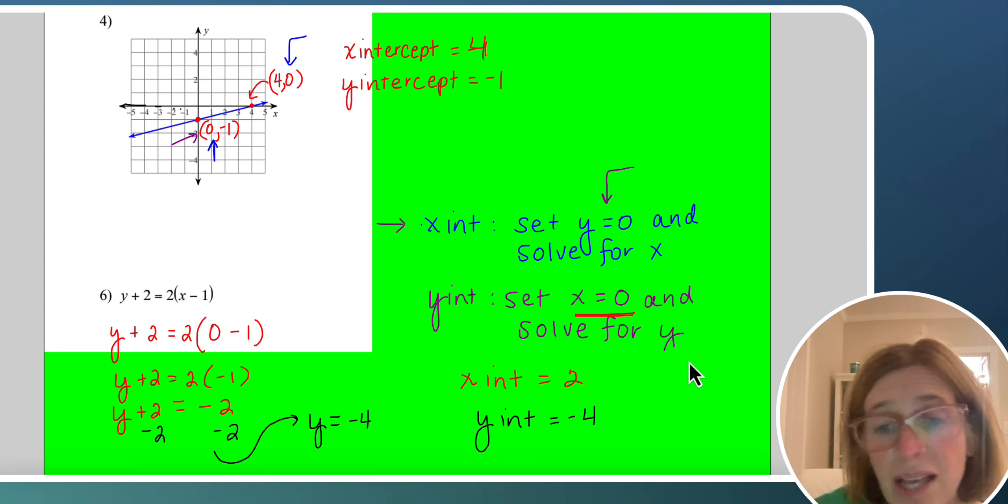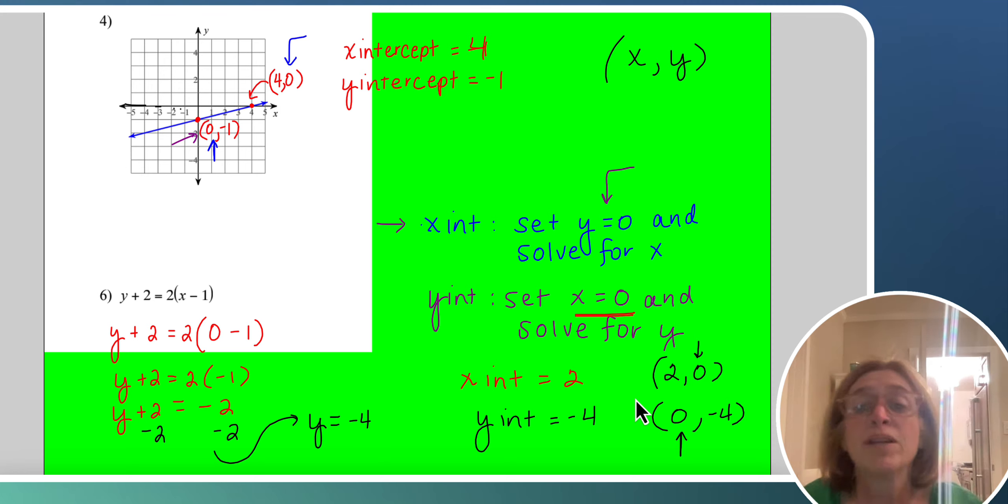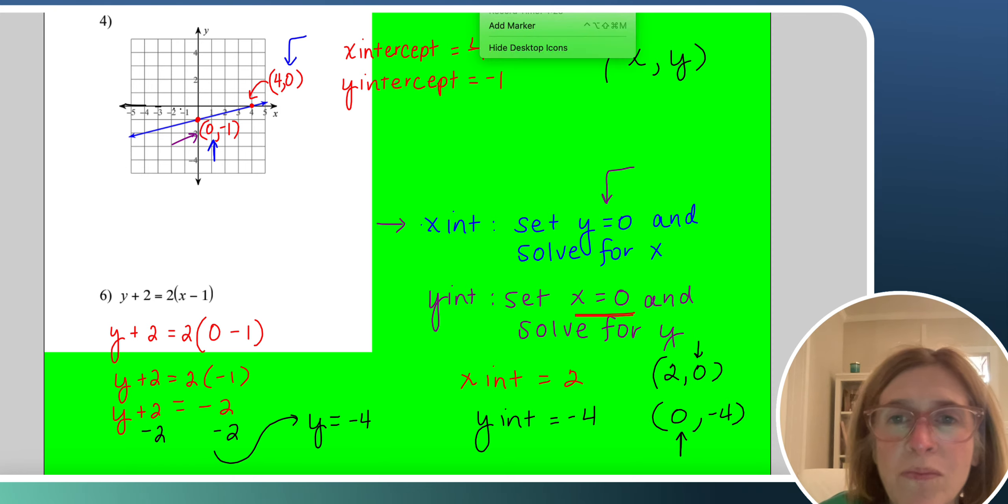Now, you'd write this as 2 comma 0 and 0 comma negative 4. And remember, ordered pairs are written in the form xy. So I do that because I want you really to get used to setting x equal to 0, setting y equal to 0. Hopefully that was a helpful video. Have a great day. Thank you.